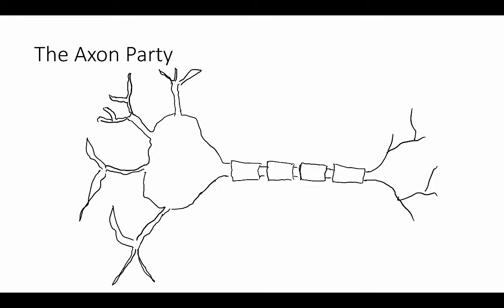What we're going to do is imagine that those ions are actually people, and those people are going to have a party. We're going to call it the axon party because that's where the action and resting potential occur.